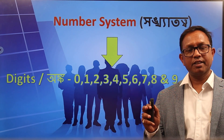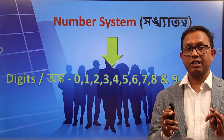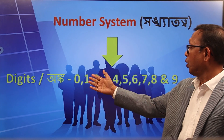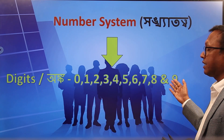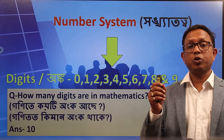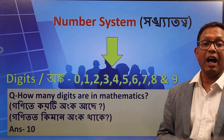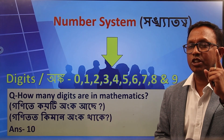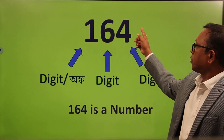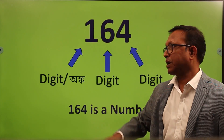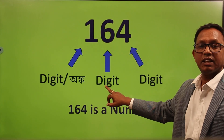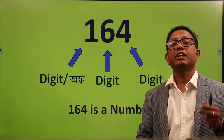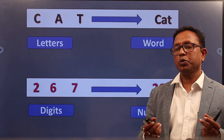Very interesting. I am going to talk about digits. How many digits are there in mathematics? Let's talk about digits. 164 is a number, but one digit, six digit, four digit. Which digit is exactly the number? That's how we can extend the number.